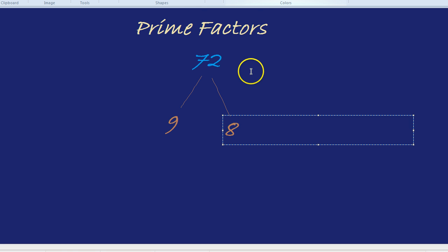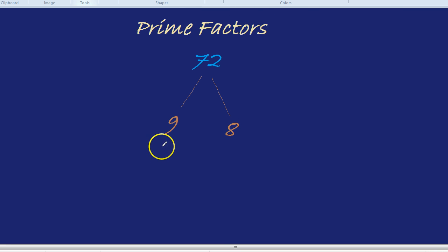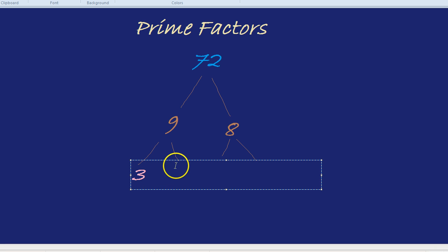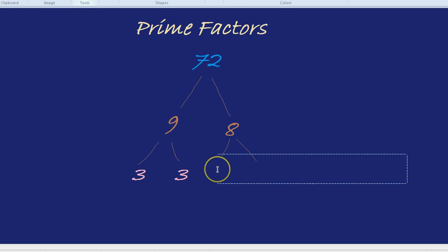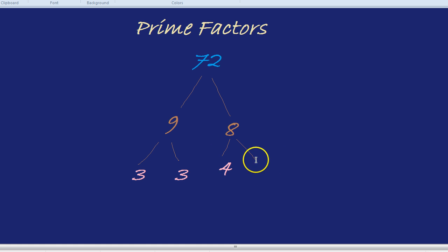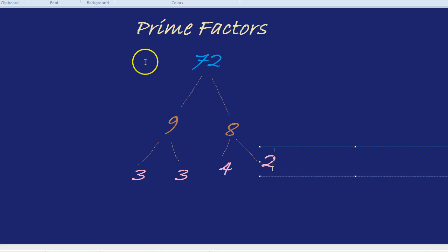Now, we're going to split those numbers up because neither of those numbers are prime. 9 isn't and 8 isn't. 9 is 3 times 3, 3 and 3. 8 is 4 times by 2, 4 times by 2.